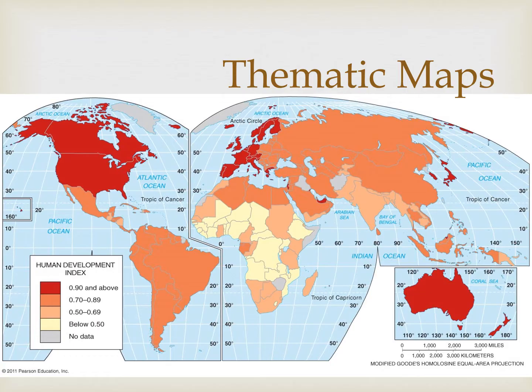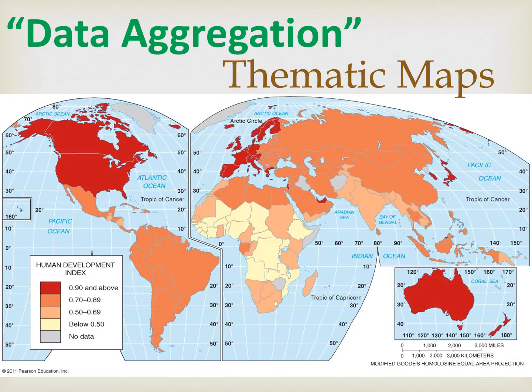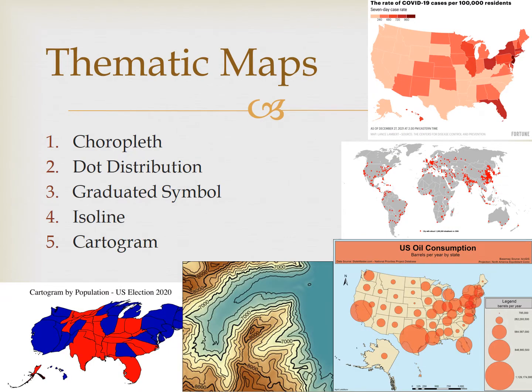These maps emphasize spatial patterns, or the distribution of a single attribute, or the relationships between multiple attributes. Cartographers that create thematic maps must collect and organize huge amounts of information — what we call data aggregation. And because there are different ways to display that data, there are multiple types of thematic maps. There are five major types of thematic maps.